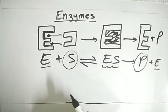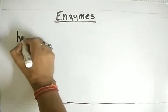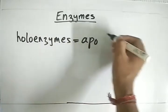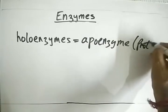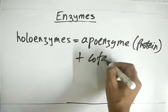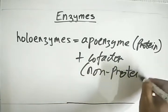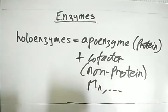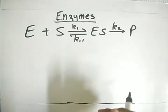Now let's talk about holoenzymes. Holoenzymes are enzymes that have a protein part called the apoenzyme, and a non-protein part called the cofactor. The cofactor could be heavy metals like magnesium, etc.